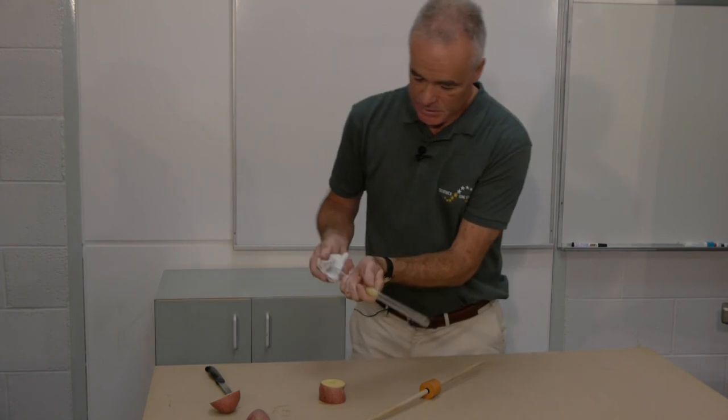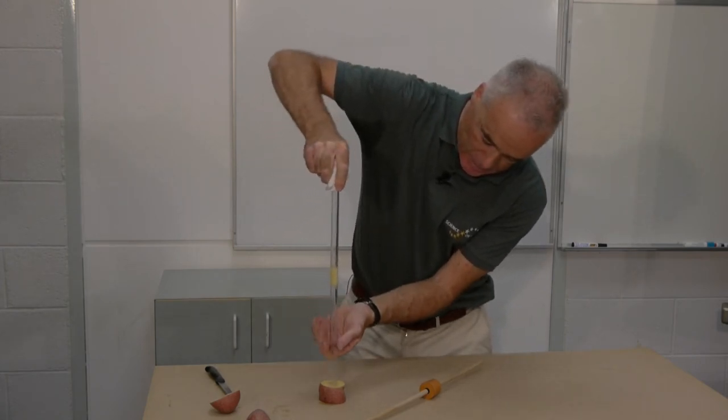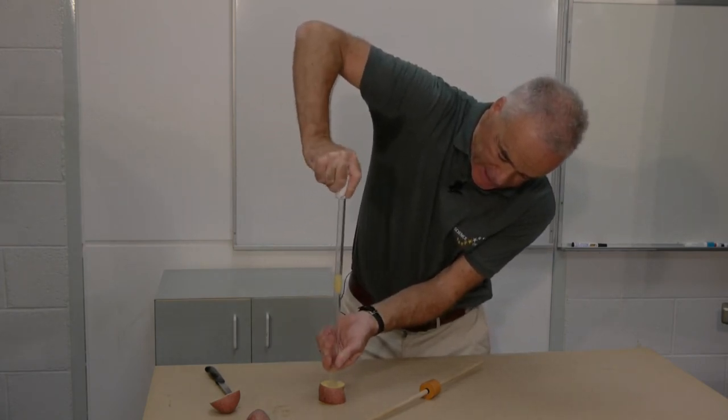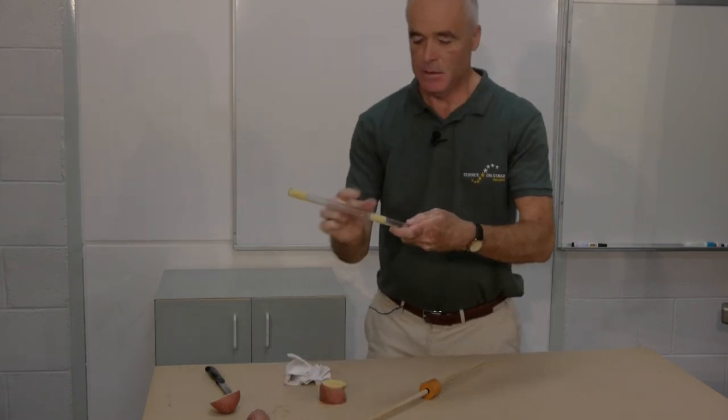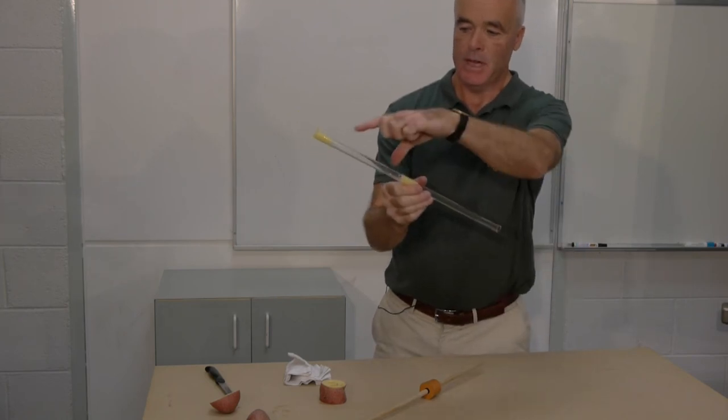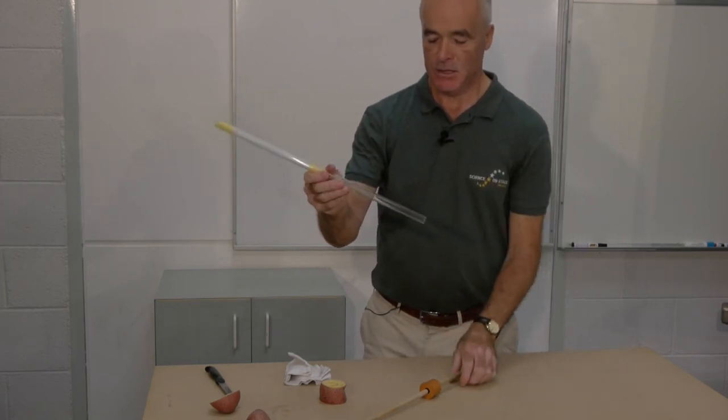To do this I again use some protection for my hand. Now you will observe that there are two wedges of potato separated by air inside the glass tube.